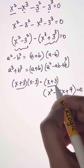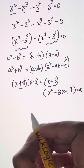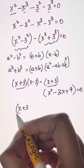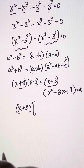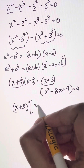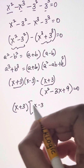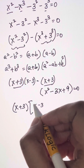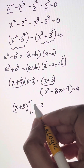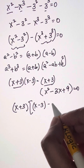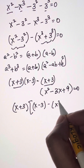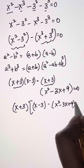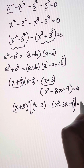Here I have x plus 3 and here I have x plus 3, so I'm going to take it out — common factor x plus 3. Then I'm left with x minus 3 here; divide the whole equation by x plus 3, you get x minus 3. Then here, minus of this whole equation, x squared minus 3x plus 9, close the brackets, equals 0.